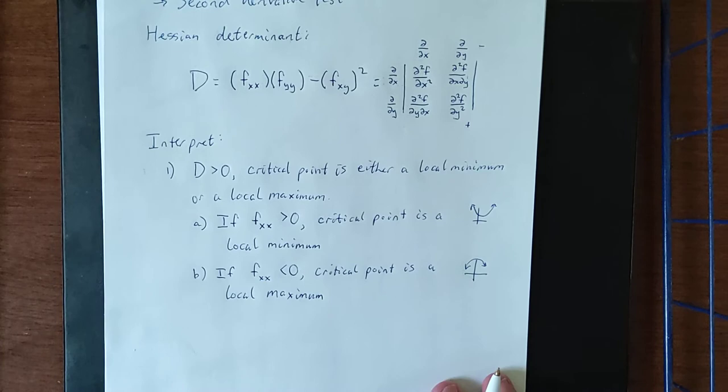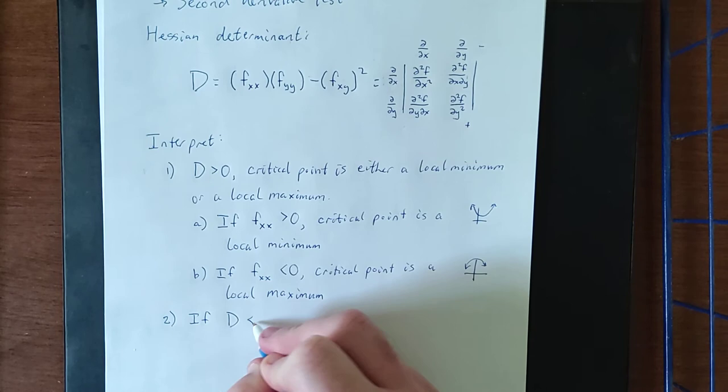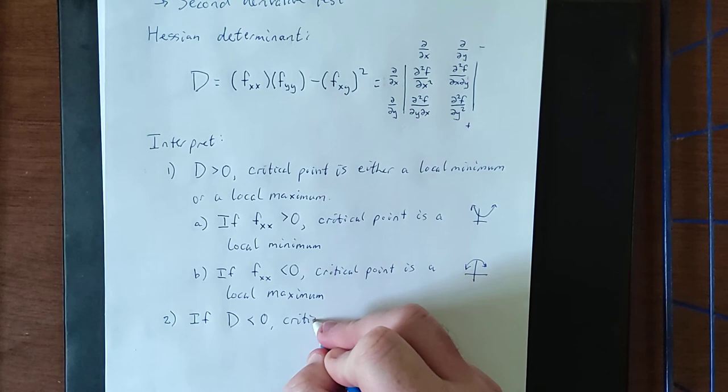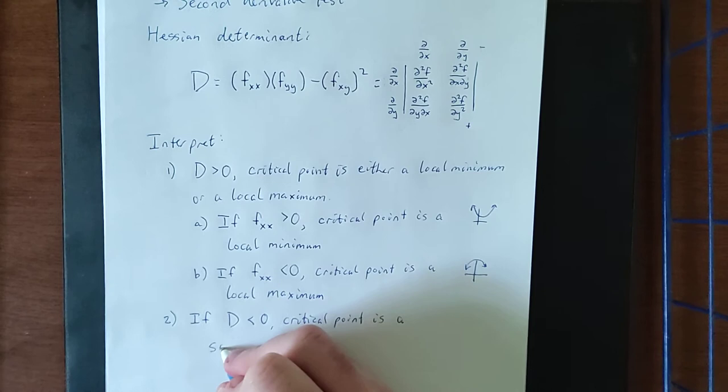Now in the event that d winds up being negative, generally what that means is that from one of these two perspectives it looks like a local maximum, and from the other it looks like a local minimum. In that case, the critical point is a saddle point.